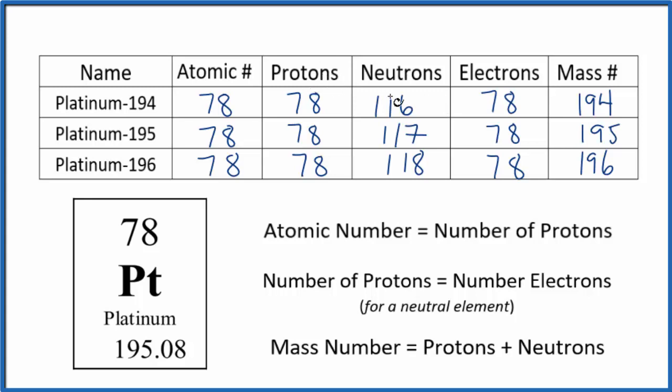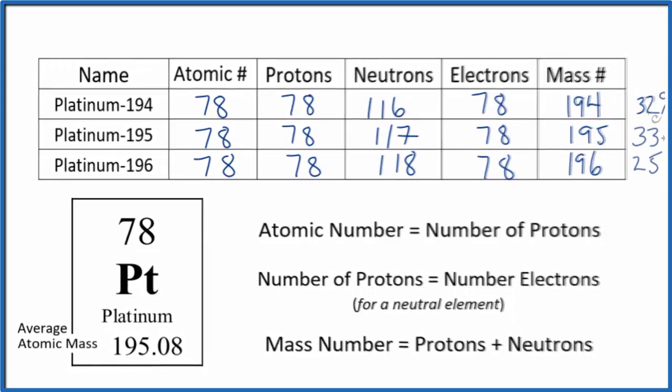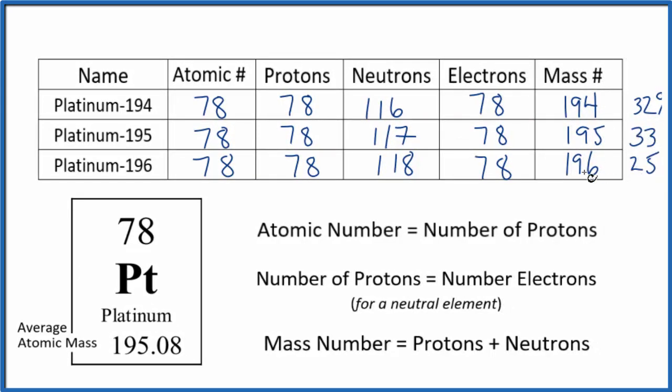If you're not given the neutrons or the mass number, you can often round this number here, the average atomic mass, to a whole number and use that for your mass number. So if we had a block of platinum, we'd have different isotopes, different atoms with different number of neutrons. If we looked at the percentages, we'd have something like this. And if we took an average of these masses here based on how much there are on the abundance, we'd end up with the average atomic mass.